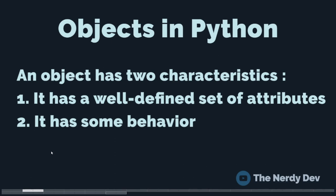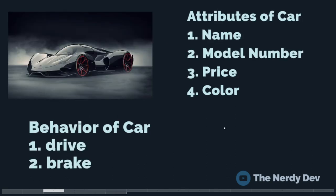Let's go over some quick points before we dive into code. An object in Python has two characteristics: it has a well-defined set of attributes and it has some behavior. To illustrate this, take the example of a car — it has a car name, model number, price, and color as its attributes, and drive and brake as its behavior, which is what it was made for in the first place.